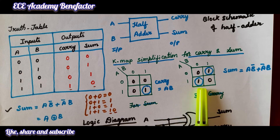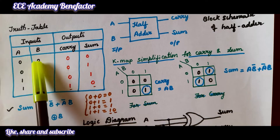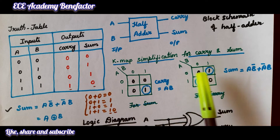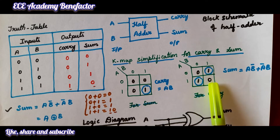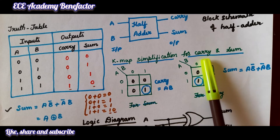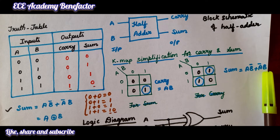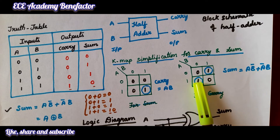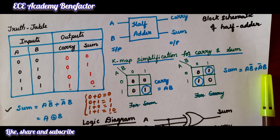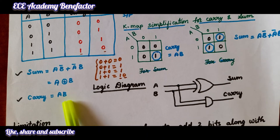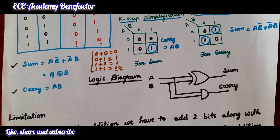Now let us draw the K-map for sum. We draw a two-variable K-map with A and B, and fill in the sum values: 0, 1, 1, 0. There is no grouping possible, so we individually circle the two 1s. For the first circle, the term is A̅·B, and for the second it is A·B̅. So the sum expression is A·B̅ + A̅·B, which equals A XOR B.